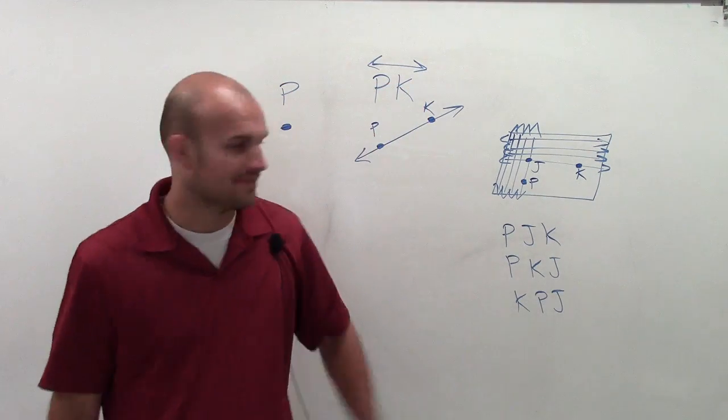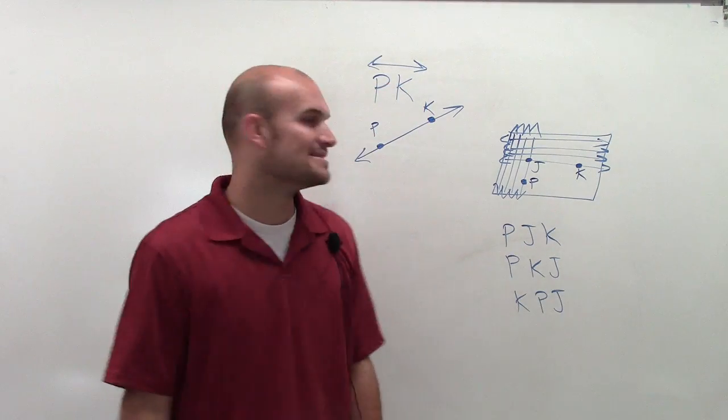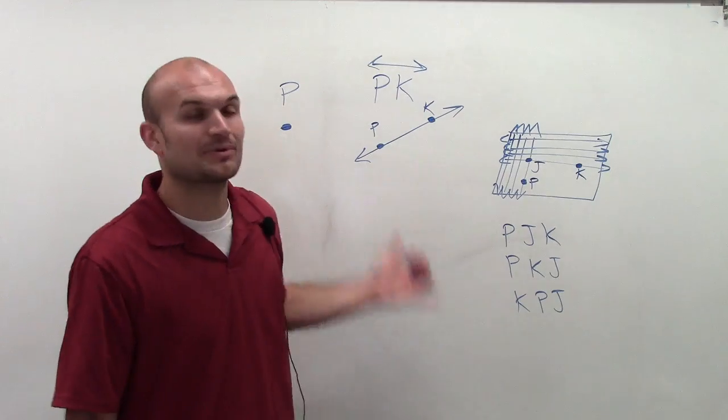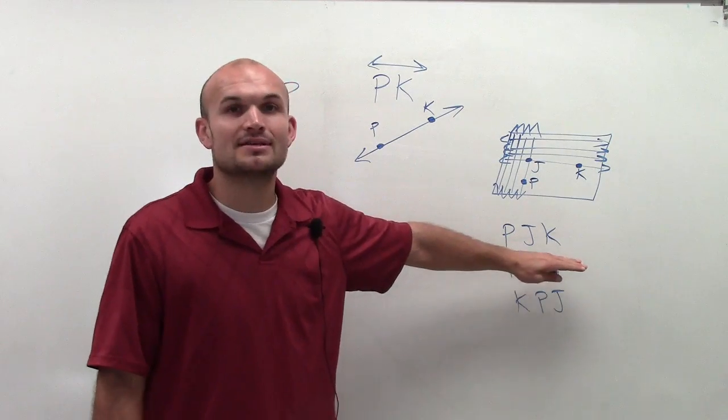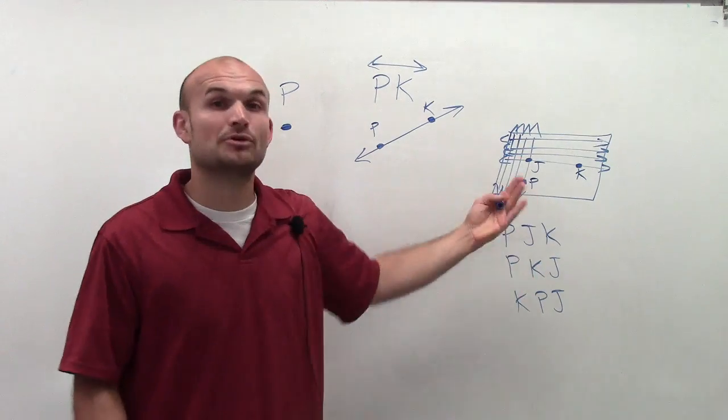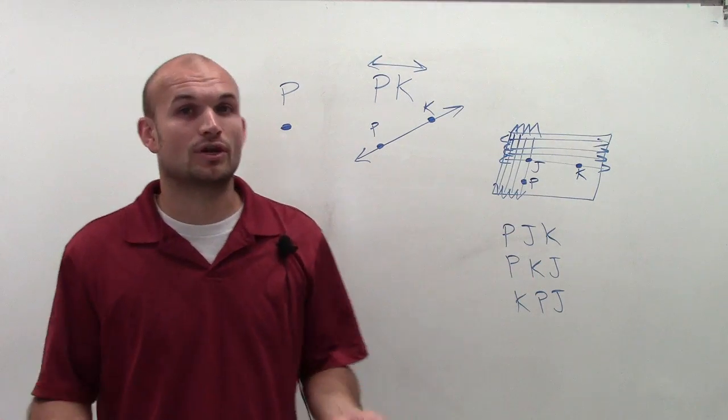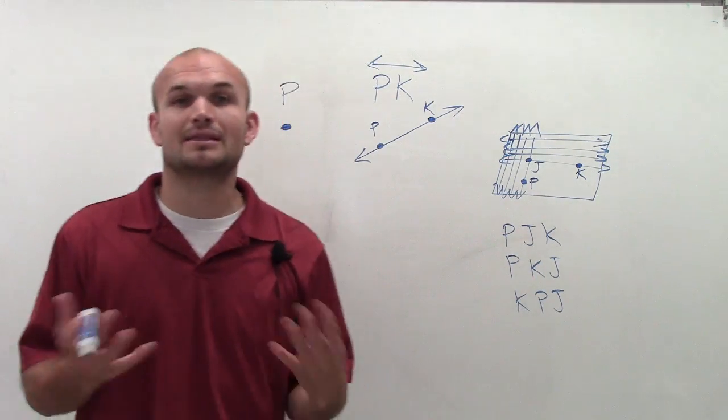And obviously, you get the point. I'm not going to go through all the combinations that you can work with a plane. But it's just important for you to understand, by labeling three capital letters, what we have done is we have just labeled our plane. Because it only takes three points to be able to label a plane.